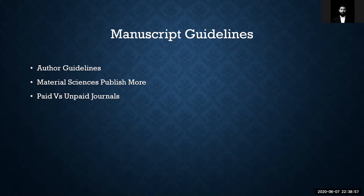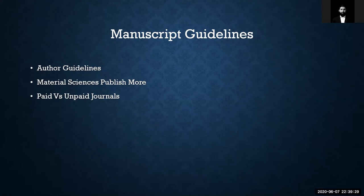I'll show you how impact factor is calculated shortly. It's basically a correlation of the number of citations a paper gets in a journal, how many years it has been in existence, and the quality of research — it's a complicated metric. For now, think of it as a quality score. The higher the score, the more reputable the journal. The lower the score, the less reputable.